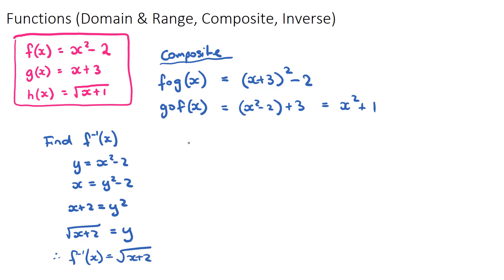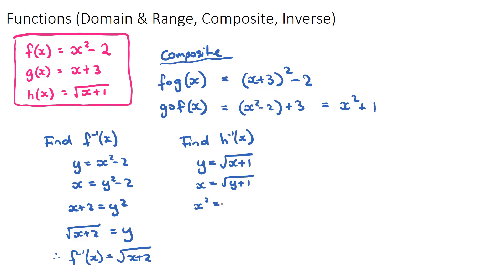One more example: the inverse of h(x) = √(x + 1). Write y = √(x + 1), then swap x and y: x = √(y + 1). Square both sides: x² = y + 1. Subtract 1: y = x² - 1. So h⁻¹(x) = x² - 1.